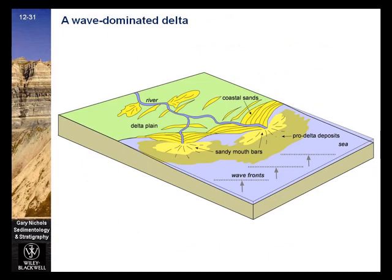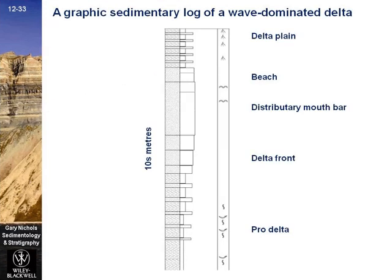This is a wave-dominated delta. Sediments of mouth bars and pro-delta are reworked to form subparallel sand ridges, both emergent and submerged near the coast. A graphic sedimentary log of a wave-dominated delta shows pro-delta deposits transitioning to delta front, distributary mouth bar, beach, and delta plain deposits.